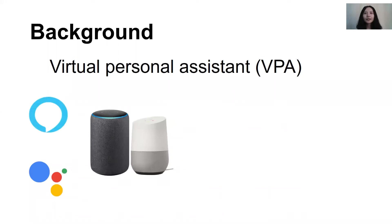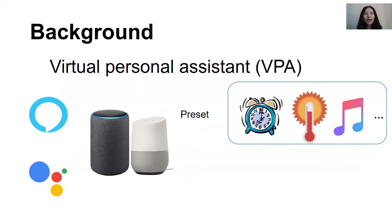A virtual personal assistant is a software agent that can perform tasks or services for individuals based on command operations, such as Alexa, Google Assistant, Siri, and so on. These VPAs are loaded on some smart devices to provide services, especially smart speakers like Amazon Echo and Google Home.